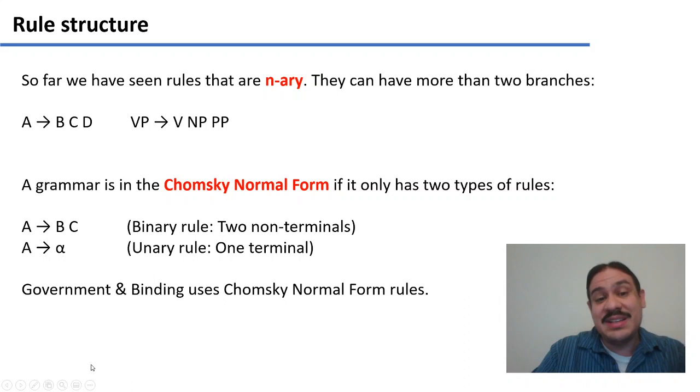Which only really have two forms: binary, where you have one non-terminal going to two non-terminals, so a sentence is a noun phrase and a verb phrase, or for example, a noun phrase is a determiner and a noun. So you've studied binary rules, and you also have unary rules, which go from a non-terminal to a terminal. And this one is noun goes to house, verb goes to walks.